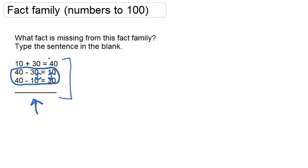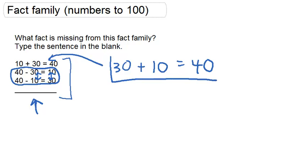So we know that this sentence right here probably has a related sentence that isn't being shown. And actually, if we rearranged it as 30 plus 10 equals 40, then we would have our missing sentence. 30 plus 10 equals 40.